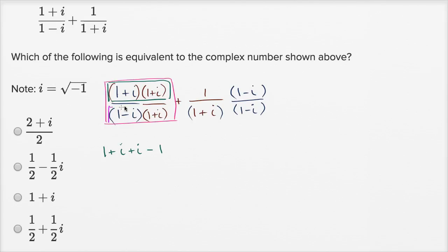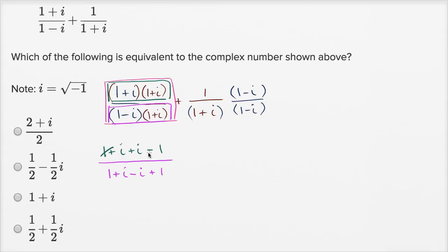And then the denominator is (1+i)(1-i). You could say this is a difference of squares. Let me just multiply it out: one times one is one, one times i is +i, negative i times one is -i, and negative i times positive i — well, i times i is negative one, but we have this negative, so it's just going to be +1. So one minus one cancels out, and i minus i is zero. The denominator simplifies to two, and the numerator gives us 2i.